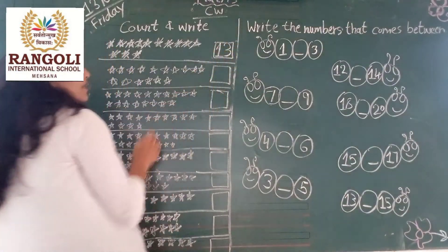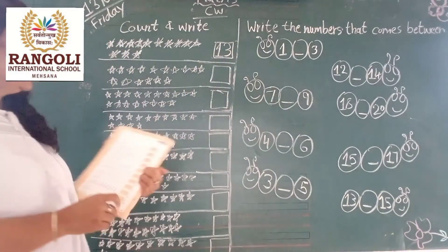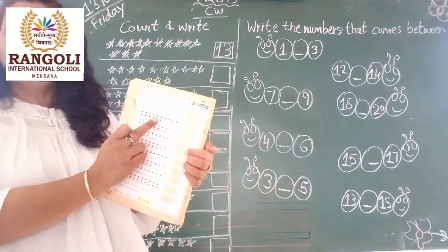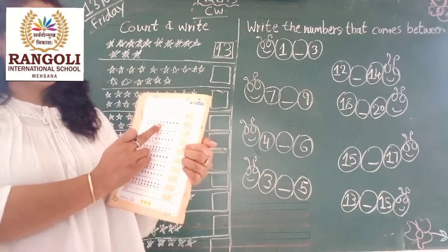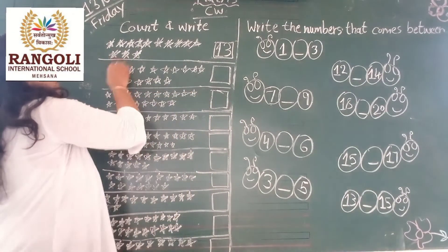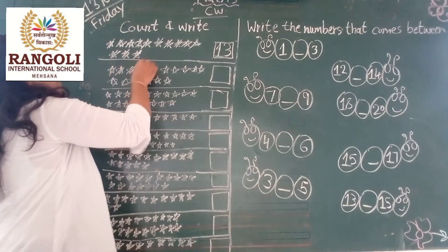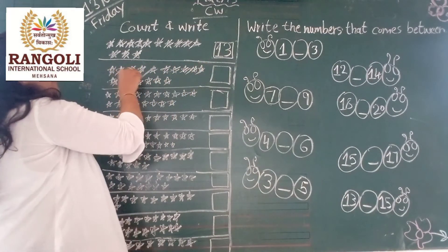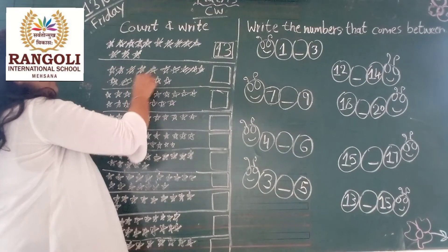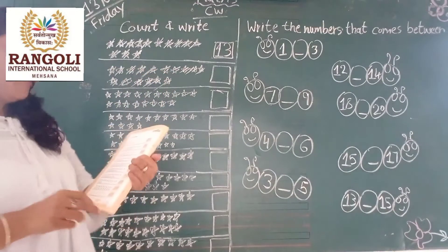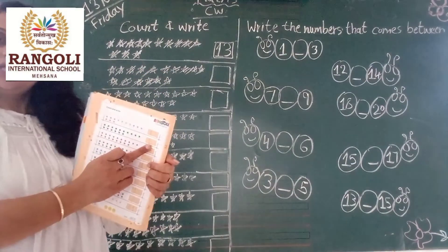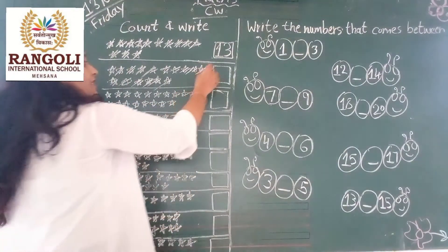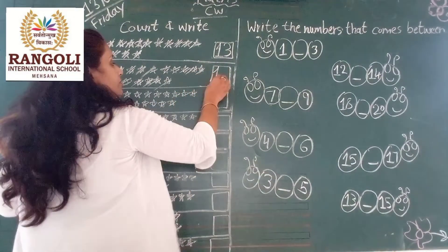In this box. Okay, after 30, you have to count these green stars. So, 1, 2, 3, 4, 5, 6, 7, 8, 9, 10, 11, 12, 13, 14, 15, 16. How many stars? 16. So, you have to write 16 numbers in this box.